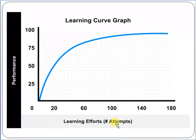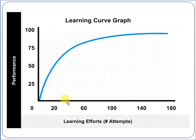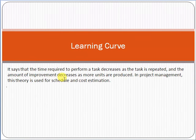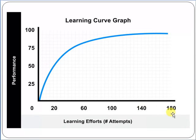Here on this axis is learning efforts or number of attempts, and this axis shows performance units. When we start putting in more attempts, performance units also increase. But after around 140 to 180 attempts, you can see the learning curve becomes stable — it is not increasing anymore. This is the point where the amount of improvement decreases as more units are produced. After 200 or 300, it will start decreasing.